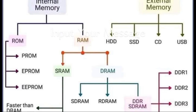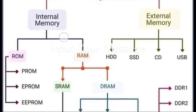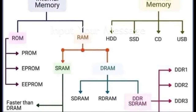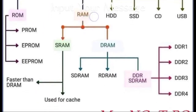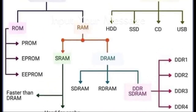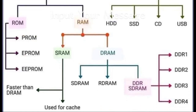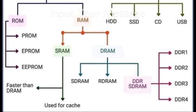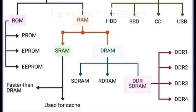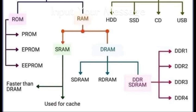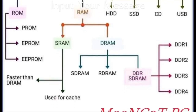The internal memory is basically divided into two parts: first is called ROM and second is called RAM. ROM is read-only memory and RAM is random access memory. ROM is permanent memory and RAM is temporary memory. ROM is used for storage while RAM provides the speed of your laptop, desktop, and mobile phone.